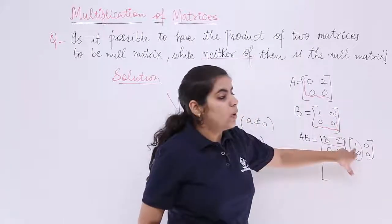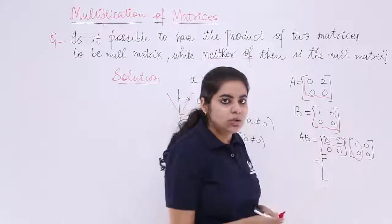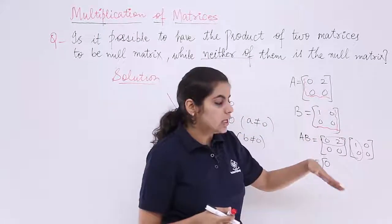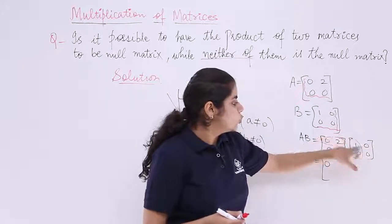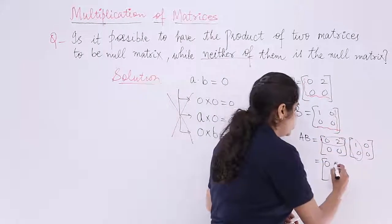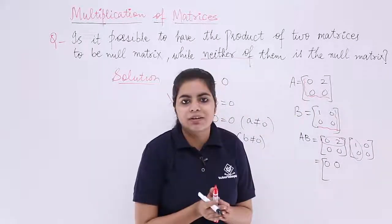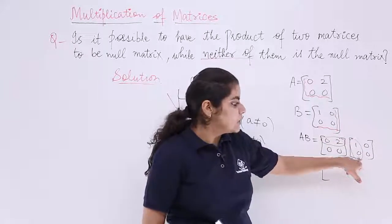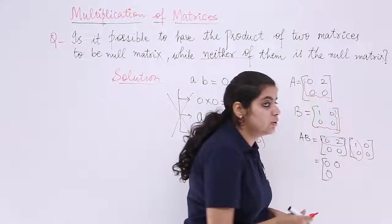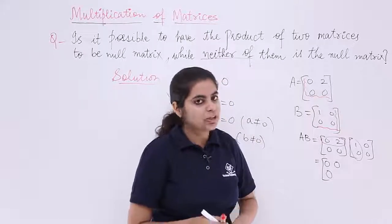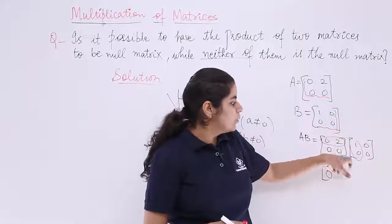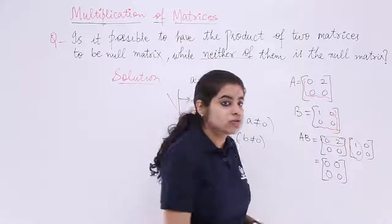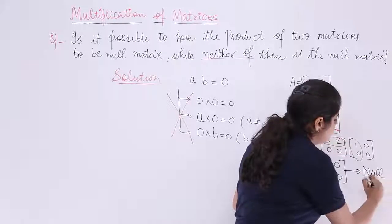We are doing this. Write 0×1 is 0, 2×0 is 0 and 0s added equals 0. Okay, we are reaching our motive. Next you come on to 0×0 is 0, 0×0 is 0, 0+0 is 0 again. Last but not the least, 0×0 is 0, 0×0 is 0, so 0+0 is 0. Now all 0s, so what kind of a matrix is it? It is a null matrix.